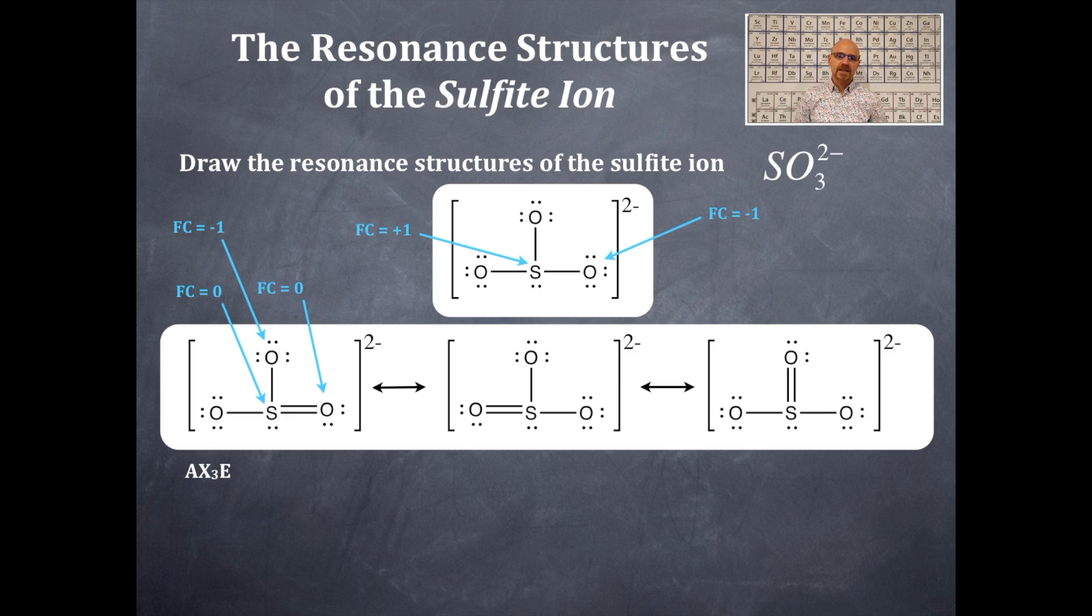You should see again that the formal charge here is perfect. And it adds up to negative 2. That is both of those oxygens have a negative 1 formal charge. And the other two are zeros. Now, you have octets on everything with all of these resonant structures.